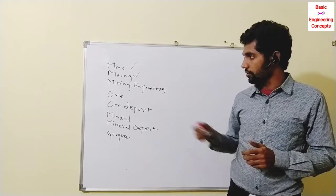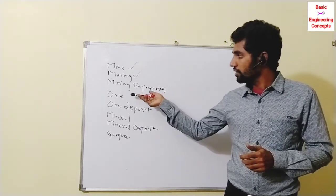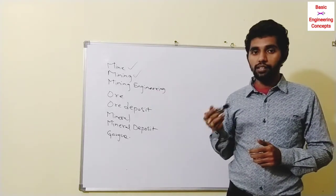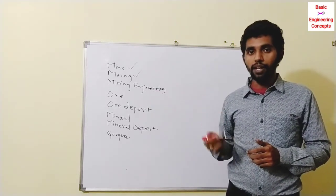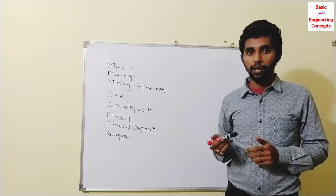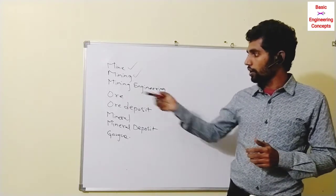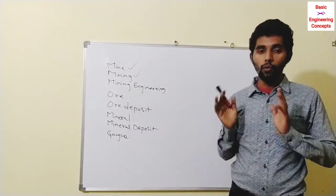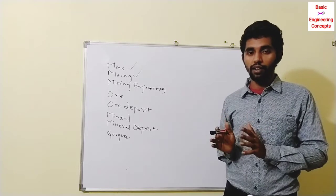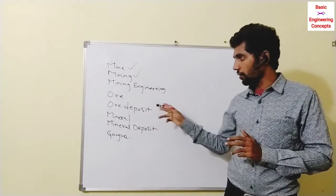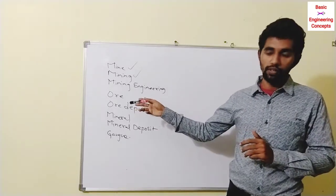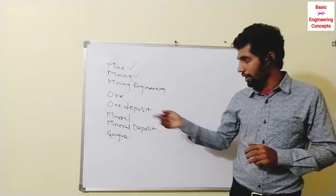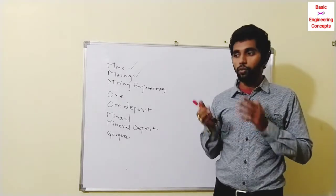So, ore is the aggregate of mineral and waste particle, which is called gang. An ore deposit is a small aggregate or concentrate of ore. That is the definition of ore and ore deposit.